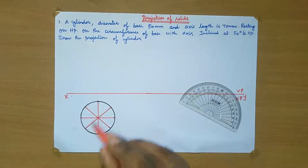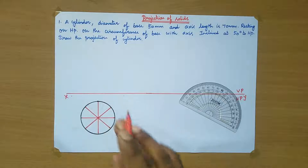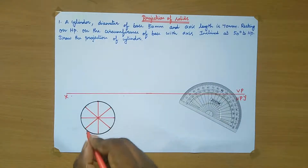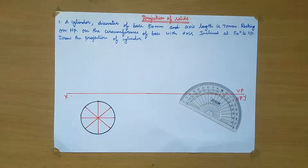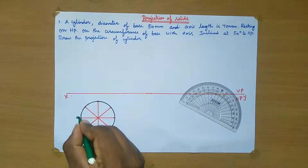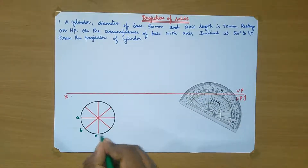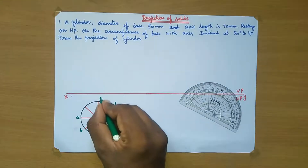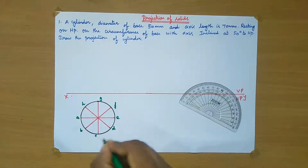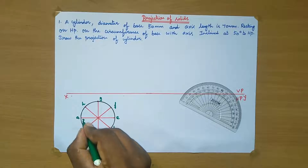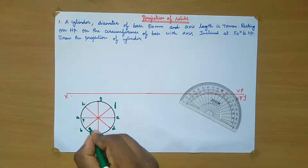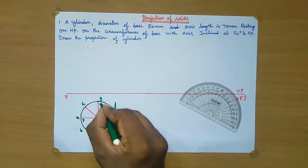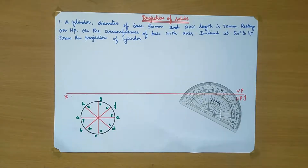The cylinder object top view section is here and the circular image is cut. After dividing the circular image, we need to name it one by one. Name this point as A, B, C, D, E, F, G, and H. Also name the inner circle points as P, Q, R, S, T, U, V, W.